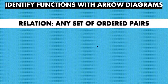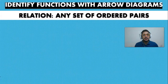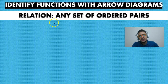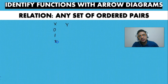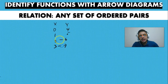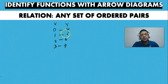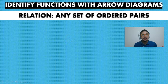The first thing we're going to look at is the definition of a relation. A relation is basically any set of ordered pairs. So if we have values of X and values of Y, it doesn't really matter what those values are — if we have values for X and Y in sets or pairs, we say that this is going to be a relation.